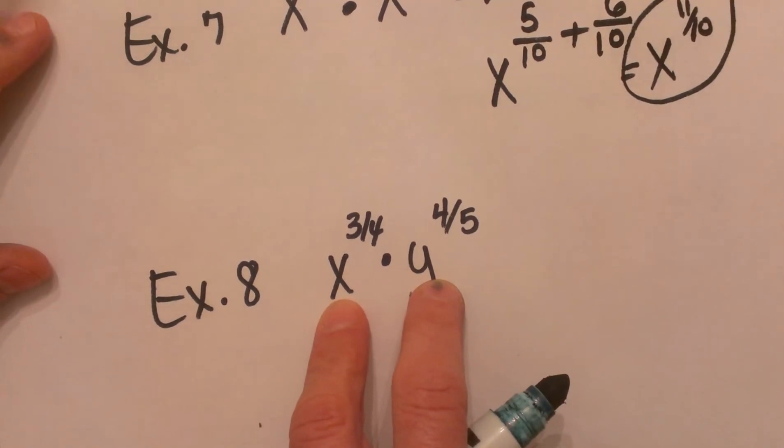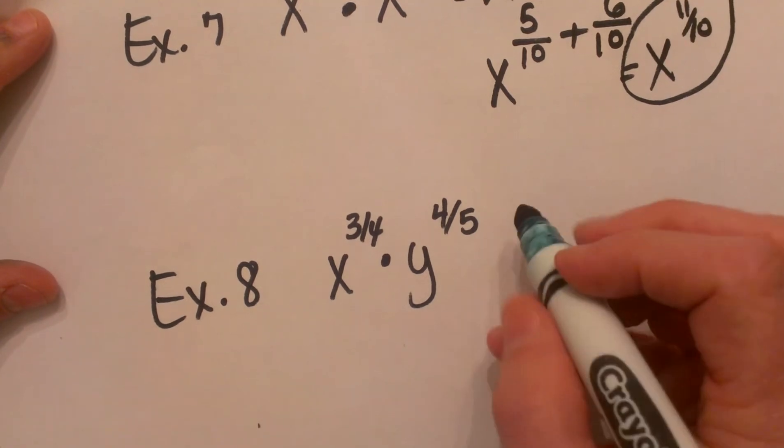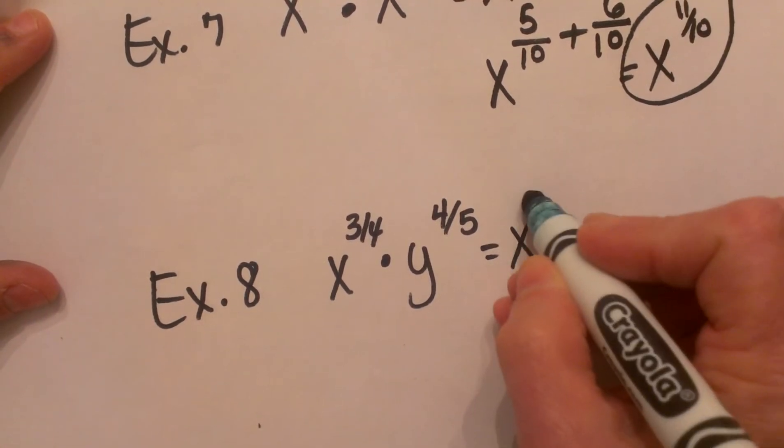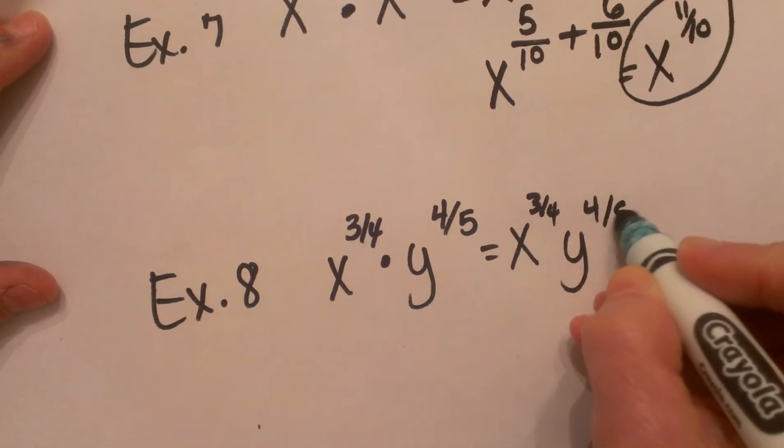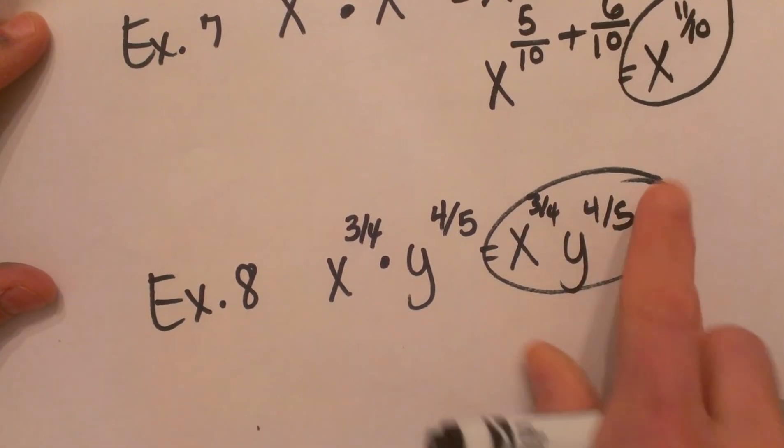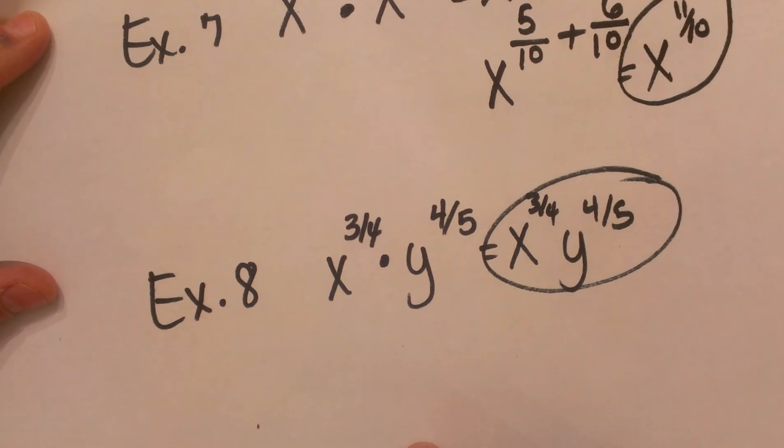So we can't add those together, we're not going to do anything with the exponents. We're just going to leave it as x to the 3 fourths, y to the 4 fifths, and there's nothing we can do with that.